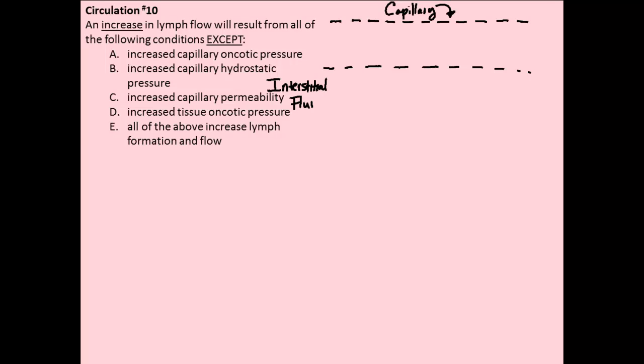From our lectures, we know there are four different pressures involved in bulk flow within capillaries. First, the heart pumps blood into blood vessels, resulting in a pressure called the blood hydrostatic pressure, or BHP. This is one of the main pressures that promotes filtration — the movement of fluids from inside the blood compartment into the interstitial fluid.